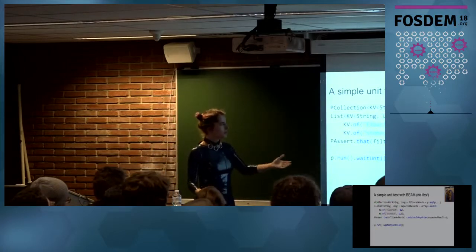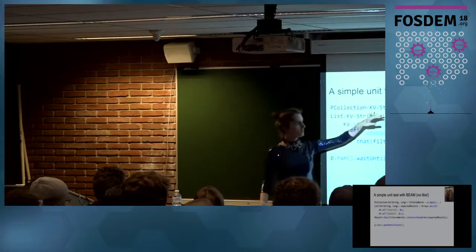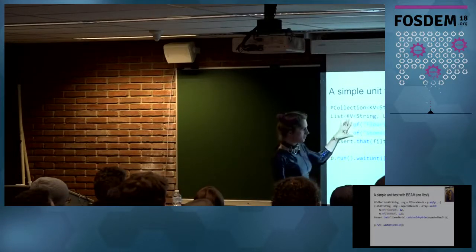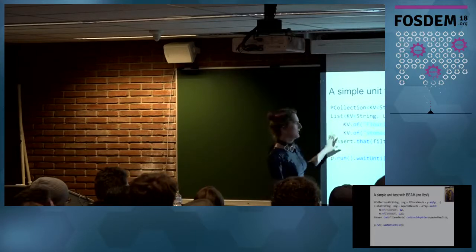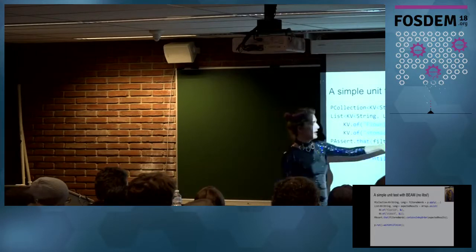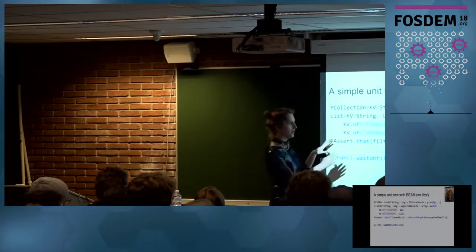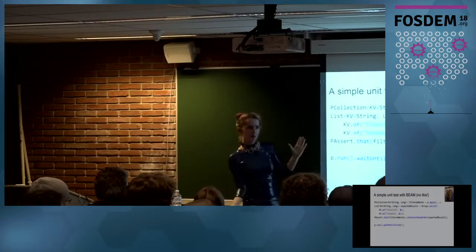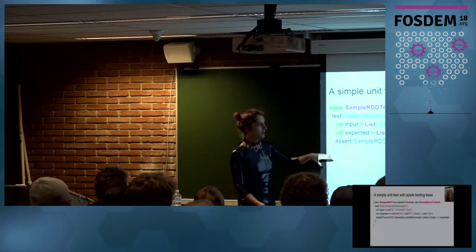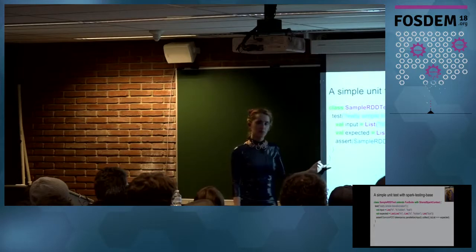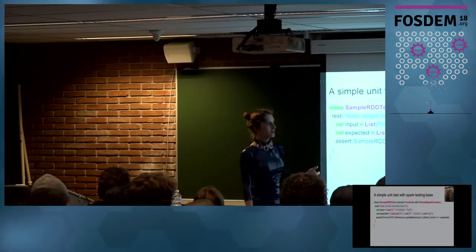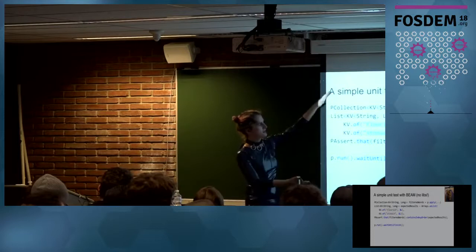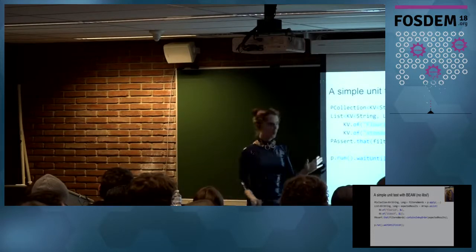In Beam, we can write something similar but it's in Java, so we've got a lot of extra angle-bracket types. We specify our expected output, run our pipeline, and have our assertion saying this is what I'm expecting to come out. This is nice in Beam because they actually thought about testing when they made it — it's built right in. Whereas in Spark, for some reason, it's not built in. My attempts to get it merged have not succeeded despite being a PMC member.